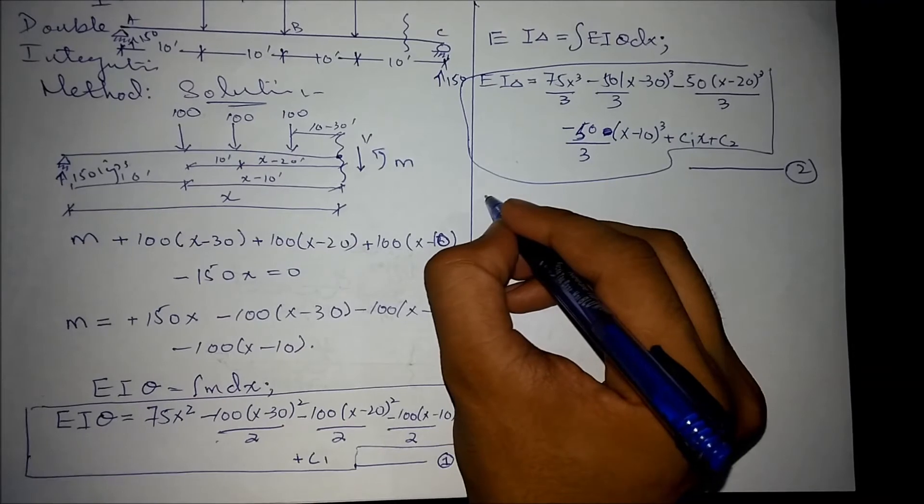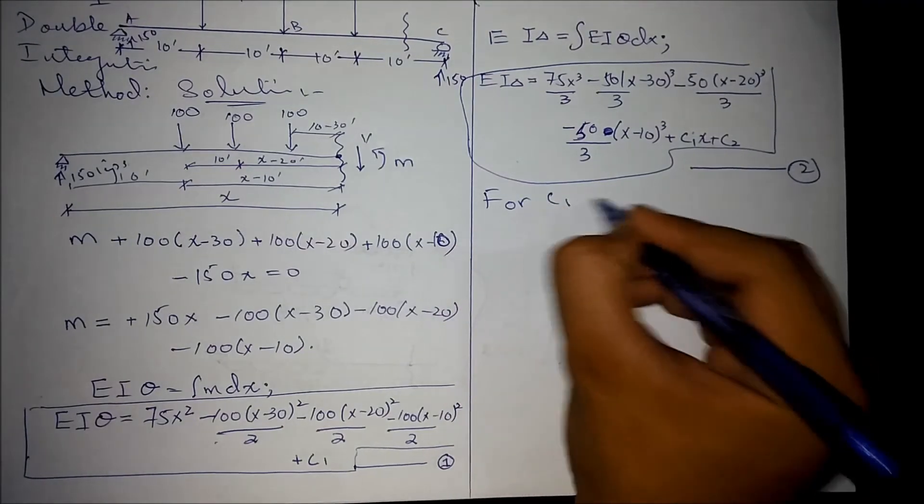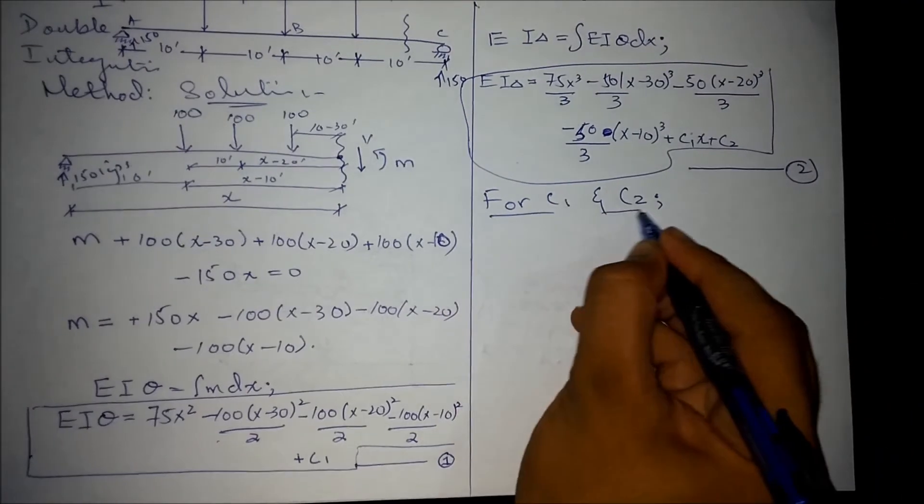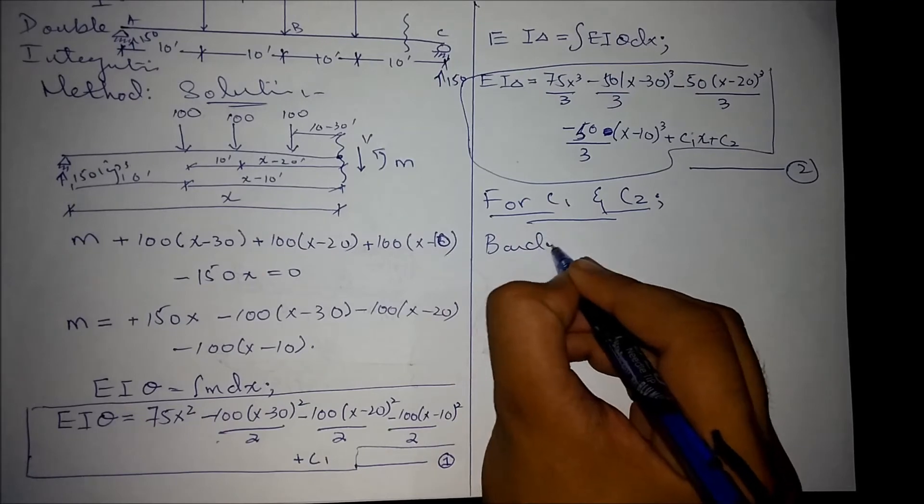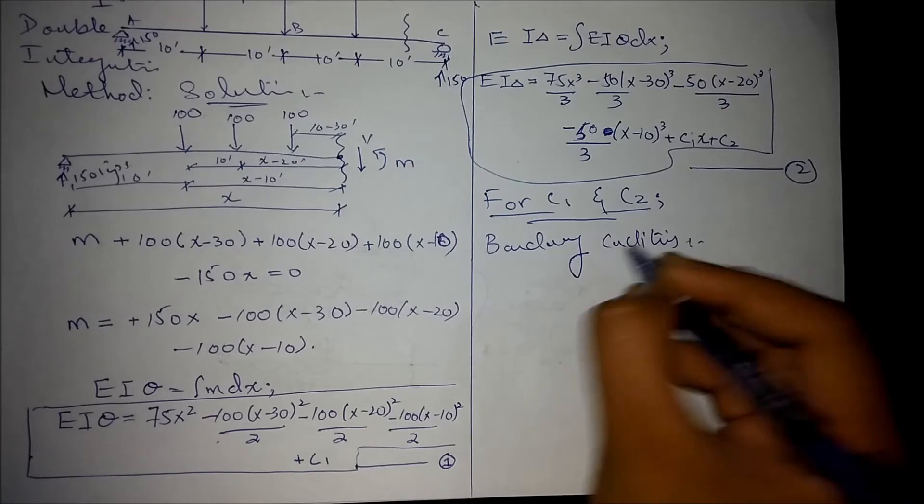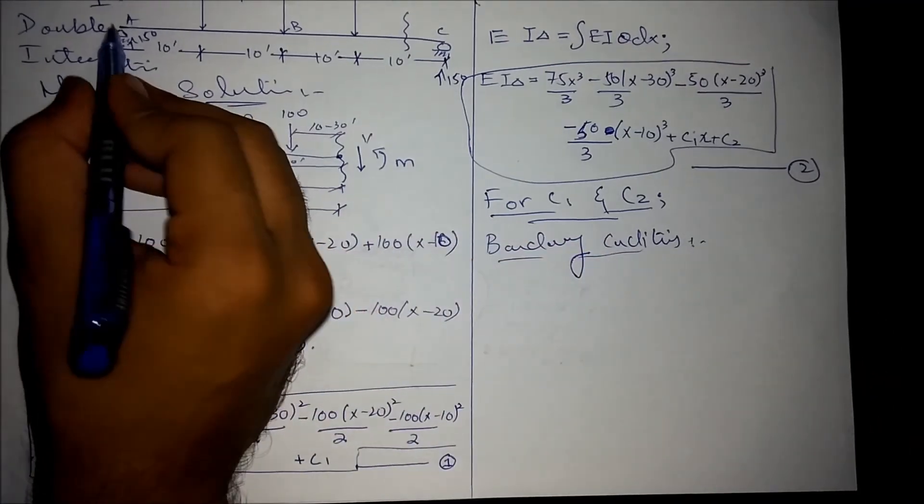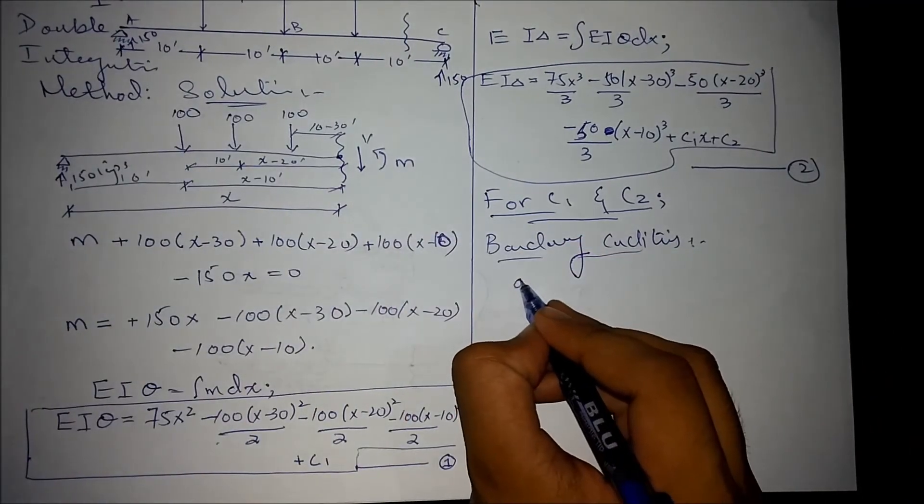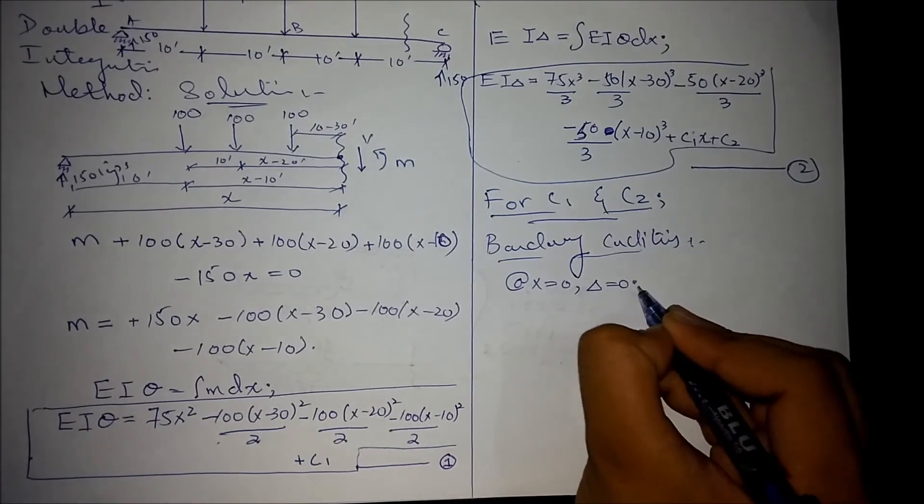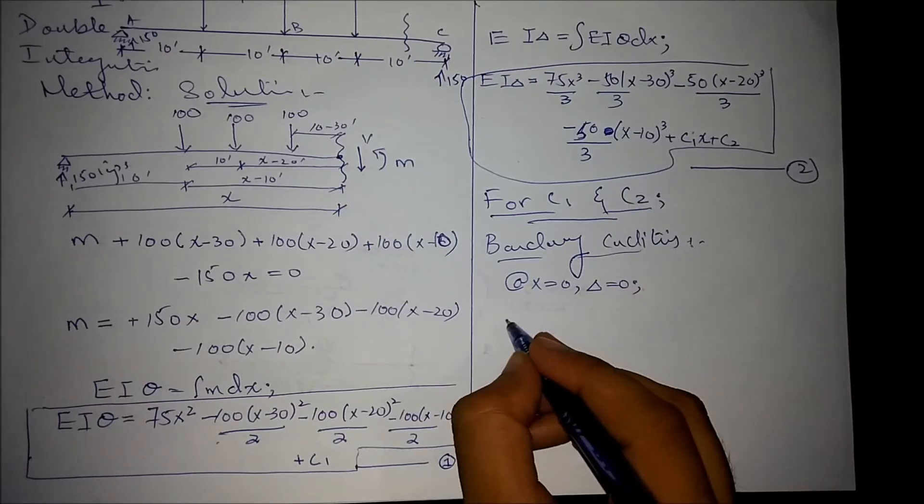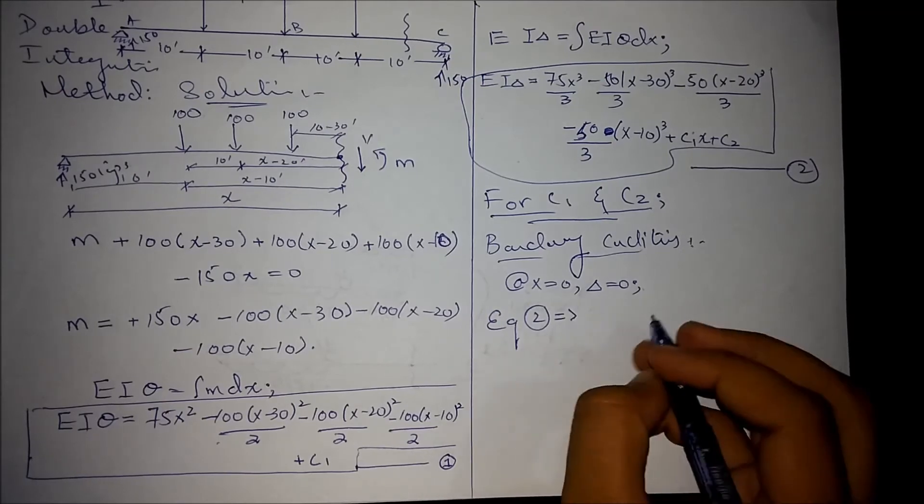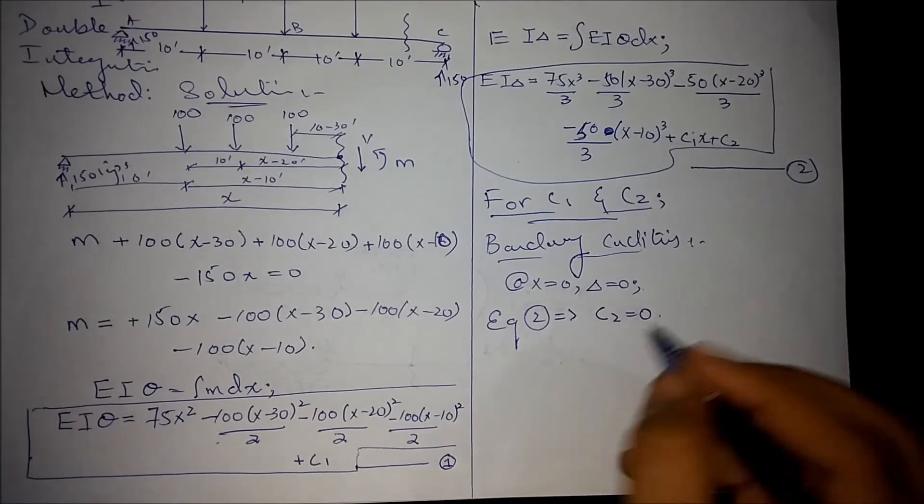Now solving for c1 and c2, this requires the boundary conditions. We know that at x is equal to 0, deflection is equal to 0. Putting these values in equation number 2, we get c2 is equal to 0.